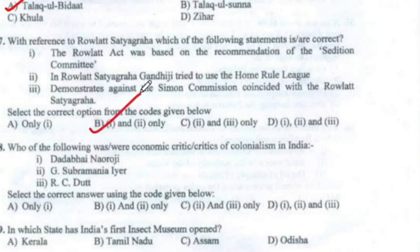Question 28: Who of the following was an economic critic of colonialism in India? The answer is Option B — Dadabhai Naoroji, Subramaniam Ayer and R.C. Dutt.